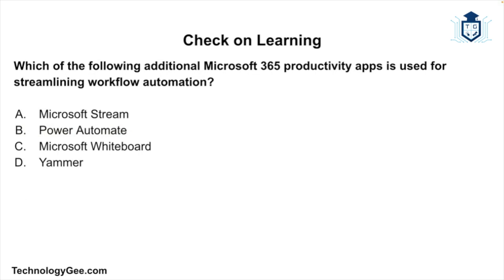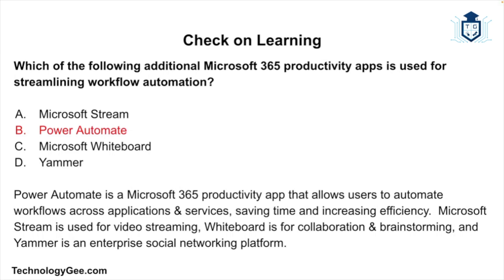Our final question: Which of the following additional Microsoft 365 productivity apps is used for streamlining workflow automation — Microsoft Stream, Power Automate, Microsoft Whiteboard, or Yammer? The correct answer is Power Automate. Power Automate is a Microsoft 365 productivity app that allows users to automate workflows across applications and services, saving time and increasing efficiency. Microsoft Stream is used for video streaming, Whiteboard is for collaboration and brainstorming, and Yammer is an enterprise social networking platform.